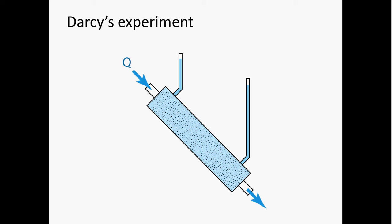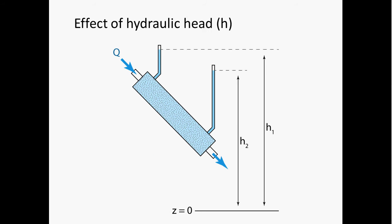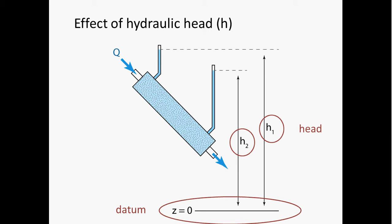What Darcy did was set up a tube that contained some sand, and that tube had some smaller tubes called manometers poking near the inflow and outflow ends. He flowed water through the sand tube and observed how different variables affected flow. Hydraulic head is the name given to the height that water rises in the manometers relative to some arbitrary datum — typically sea level in natural environments.